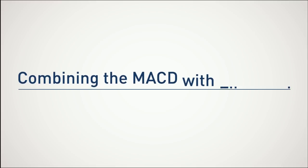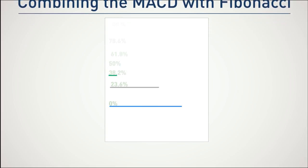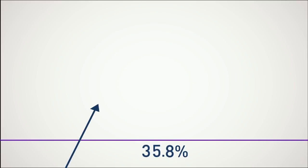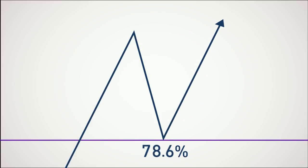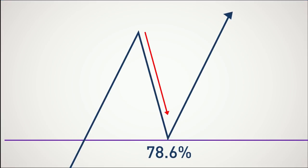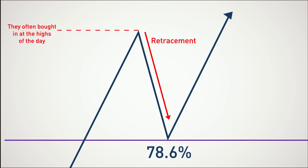Combining the MACD with Fibonacci. If you have been day trading for longer than five minutes, you will quickly realize that Fibonacci levels play an important part in price action intraday. My favorite Fibonacci retracement level for buying pullbacks is 78.6 percent. Simply put, this retracement is deep enough that retail longs are feeling real pain because they often bought in at the highs of the day. This pain causes retail traders to capitulate, which can result in sharp counter rallies.